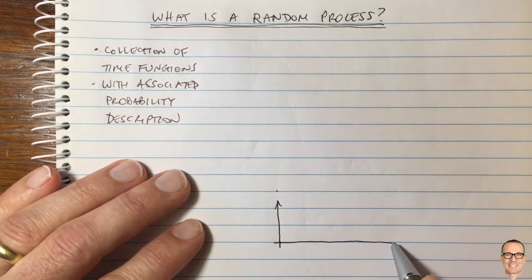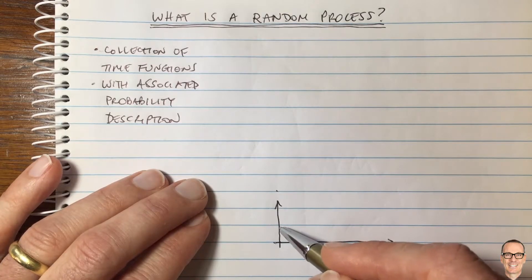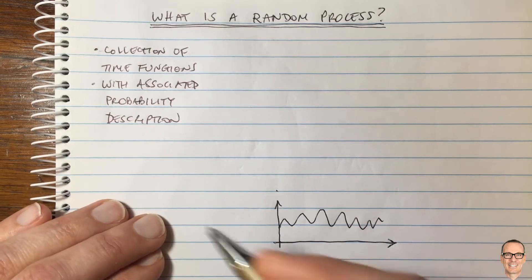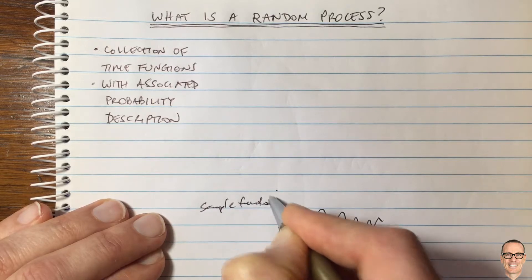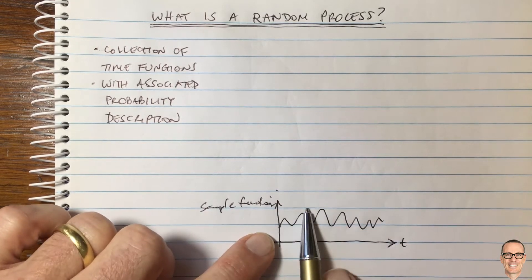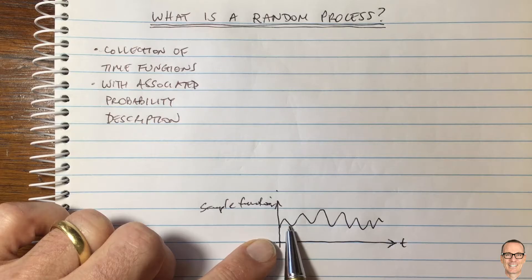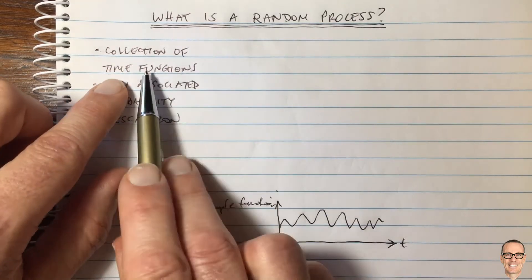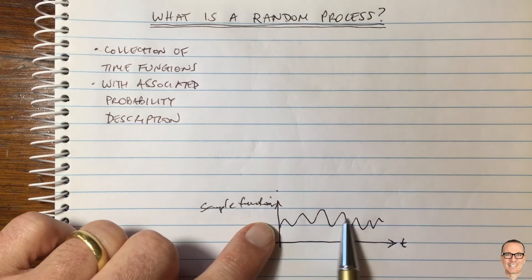We're going to consider the example of a mobile telephone call where we're looking at the amplitude of the signal during the call. Here is one potential measurement, what we call a sample function. This is over time, and this might be the amplitude as we move around and all the multipaths bounce off the different buildings, and the level of the signal goes up and down in this random way.